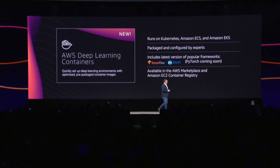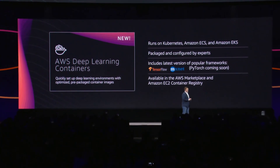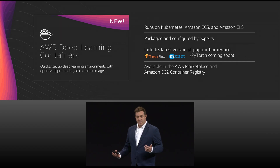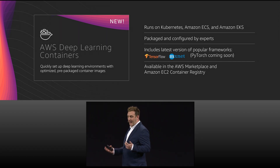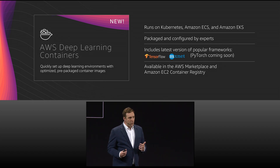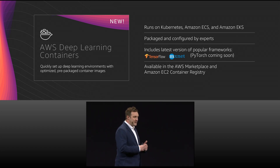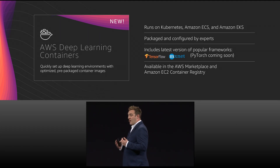Today, I'm very proud to announce AWS Deep Learning Containers. These Deep Learning Containers allow you to quickly set up deep learning environments on EC2 using Docker containers. They run on Kubernetes, ECS, and EKS. We've done all the hard work of building, compiling, generating, configuring, and optimizing all of these frameworks so you don't have to.